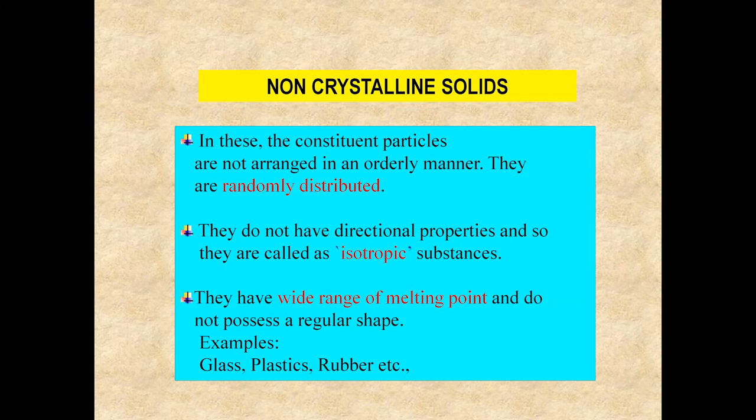In non-crystalline solids, the particles are not arranged in a systematic or orderly manner — they are randomly distributed. They do not have directional properties and are therefore known as isotropic substances. They have a wide range of melting points and do not possess a regular shape. Examples of non-crystalline materials include glass, plastic, and rubber.